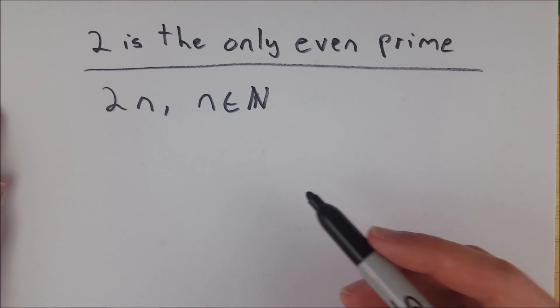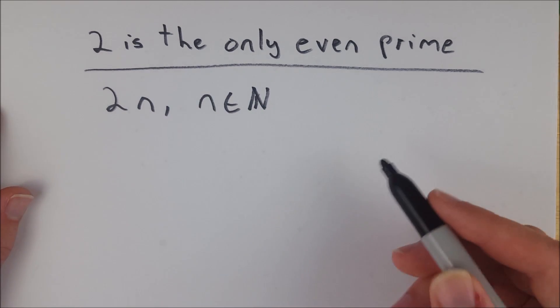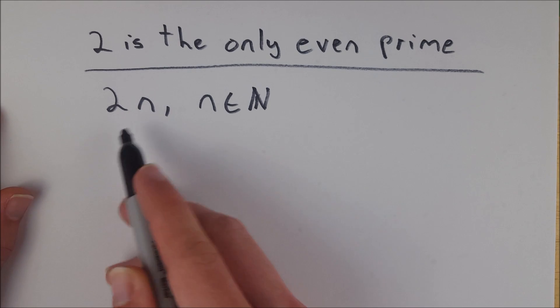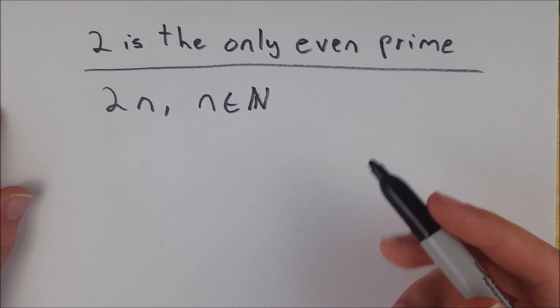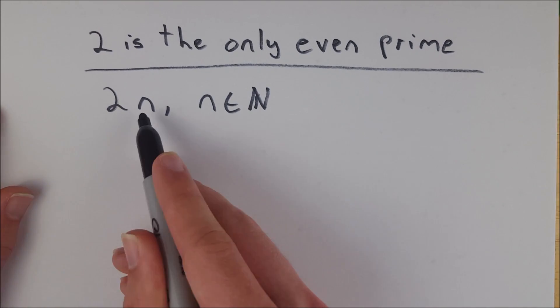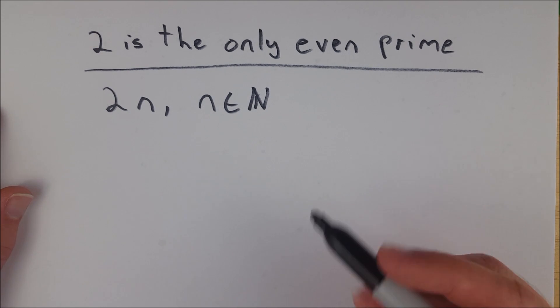So then we know that every single integer is divisible by 1. So we know that 1 is a divisor of this number 2n, and then by definition we also know that 2 is a divisor of n, and we know that n is a divisor of n. So unfortunately, any number in this form is going to have three distinct divisors, unless that number is 2.